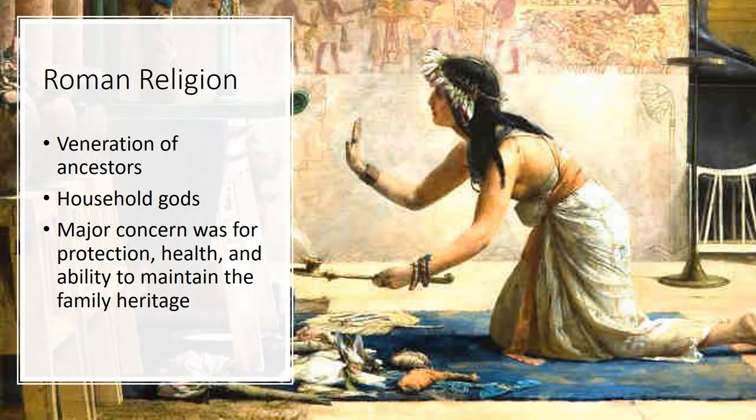Roman religion was a bit different too. Roman religion must not be equated in any way with the worship of deities per se, real or imagined. At its heart, Roman religion consisted of the veneration of ancestors. Each home possessed household gods, and sacrifices were offered to them. Oaths to maintain the family name and honor accompanied these sacrifices. The major religious concerns of the Romans was for protection, health, and the maintenance of the family heritage. No comparison can be made to Christianity, which calls for personal faith and commitment to a person.